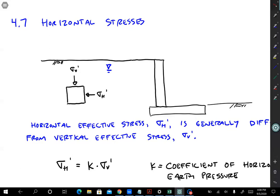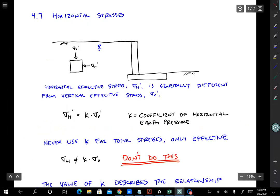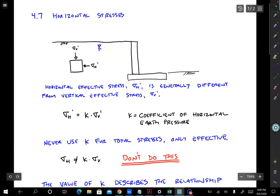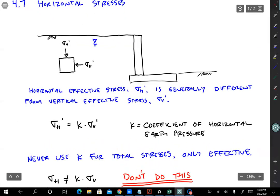It's important to understand how to calculate it so that we can do engineering problems. The thing about stress states in soil is that the horizontal effective stress, sigma h prime, is generally different from the vertical effective stress, sigma v prime. We know that pore pressure — if there's water — is the same in all directions; it can't handle any shear stress. Water pressure is the same in all directions because water has no shear strength. Soil does have shear strength; it's able to carry load in the form of interparticle contact forces. So you get a horizontal pressure that's different from the vertical pressure.